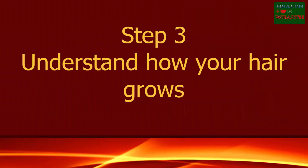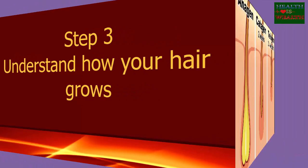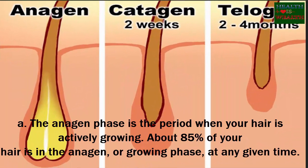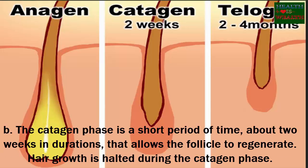Step three: understand how your hair grows. A) The anagen phase is the period when your hair is actively growing — about 85% of your hair is in the anagen, or growing, phase at any given time. B) The catagen phase is a short period of time, about two weeks in duration, that allows the follicle to regenerate. Hair growth is halted during the catagen phase.